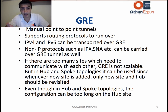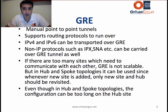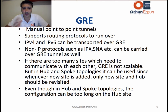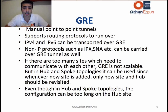DMVPN will not support IS-IS, and GET VPN cannot create any routing protocol neighbors because in GET VPN there are no tunnels in the first place. So there is no overlay mechanism on top of GET VPN, but here in GRE we can run routing protocols.